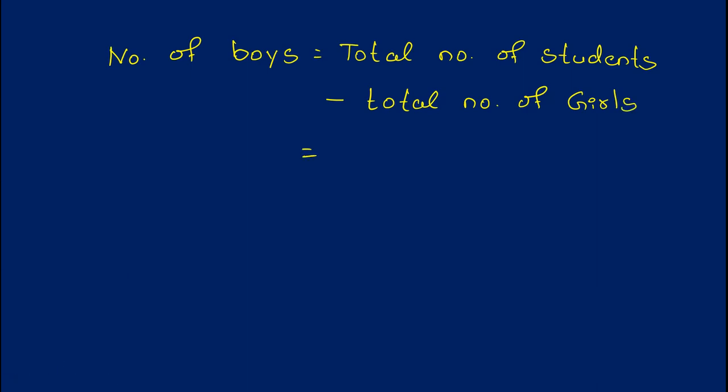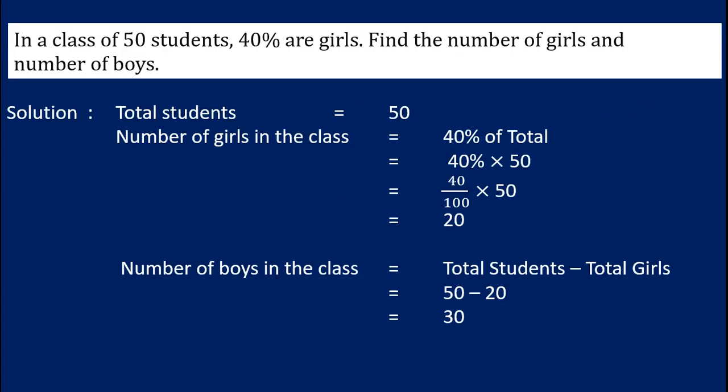The girls are equal to 20, so 50 minus 20 gives you the answer 30. 30 is the total number of boys present in the class. In this way we solve the given problem.